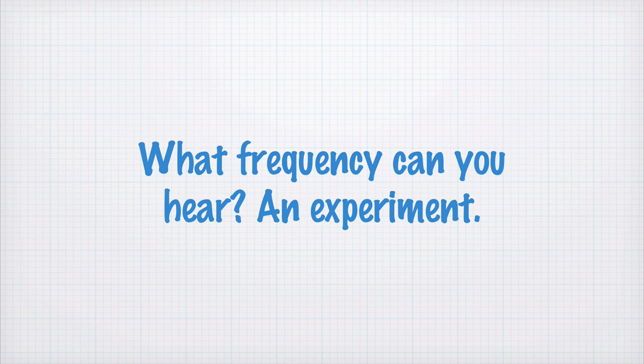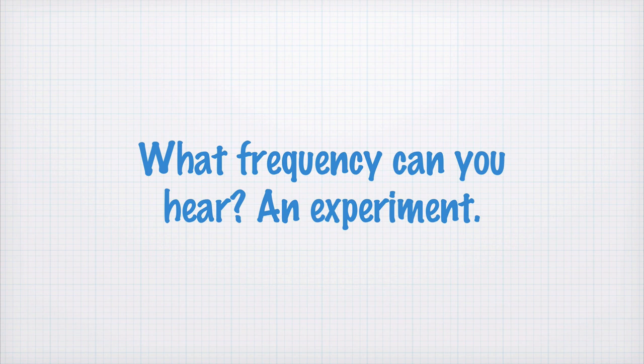Now we're going to do a little experiment with the entire class. As you age, the maximum frequency you can hear decreases. When you're born, a healthy ear can hear close to 20 kHz, and as you get older that maximum frequency drops. In the next bit of the video, you're going to hear a sound with increasing pitch — it'll increase quickly at first, then the rate of increase will slow down. With each step it'll become harder and harder to hear. At the moment you can no longer hear the sound, write down that frequency shown on screen. Then we'll enter that into an online poll and get a distribution of people's maximum hearing frequency.